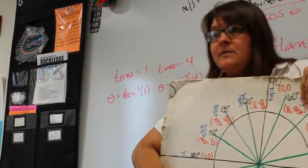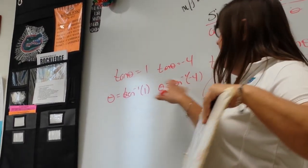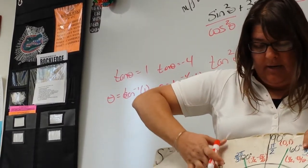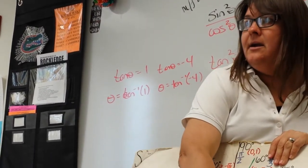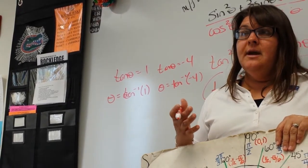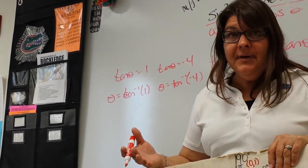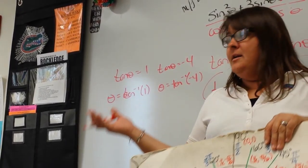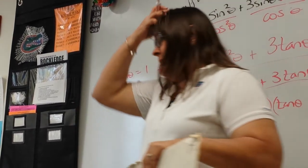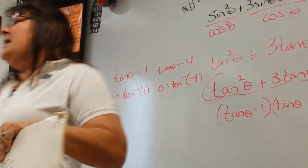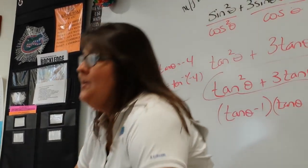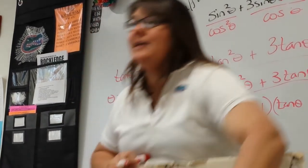Where is tangent negative? Second and fourth quadrants. So potentially I could have four answers, if they're not undefined. And it's between zero and 180, so we can ignore the quadrants below — those guys down there.